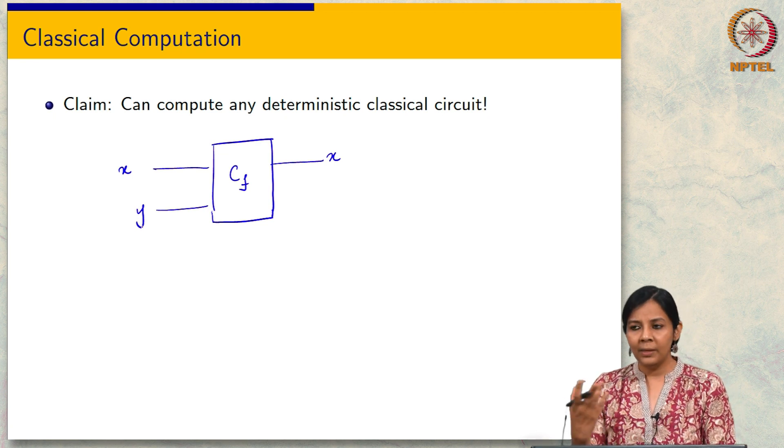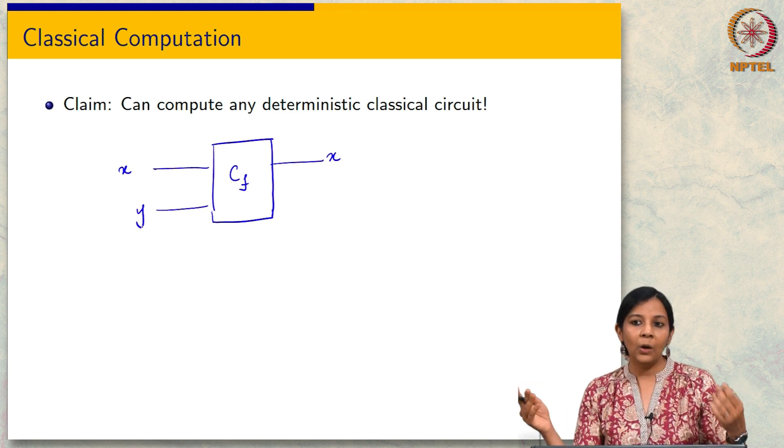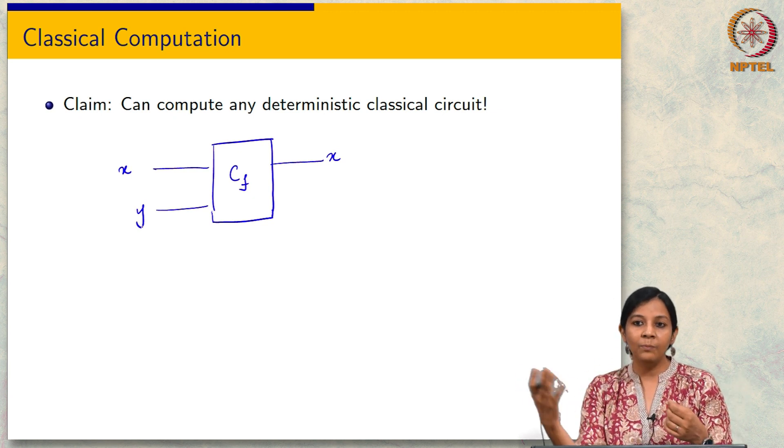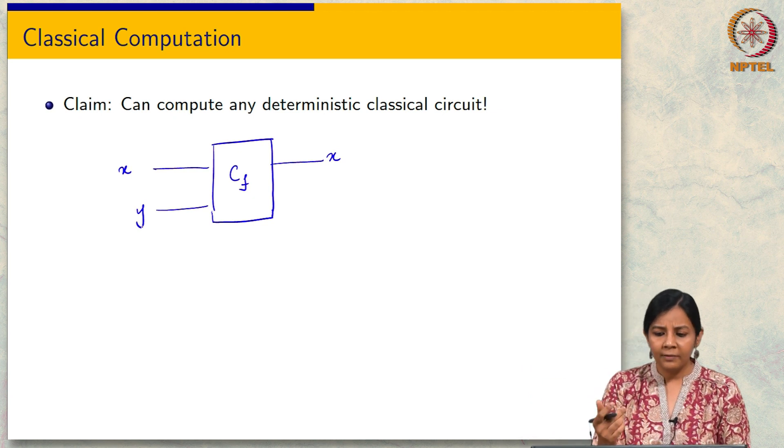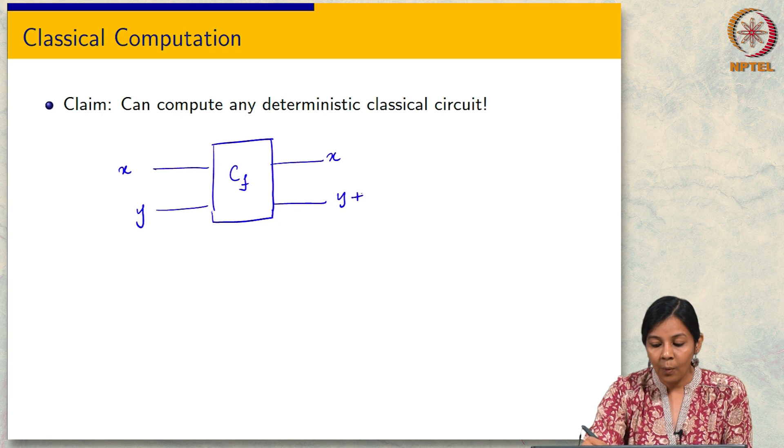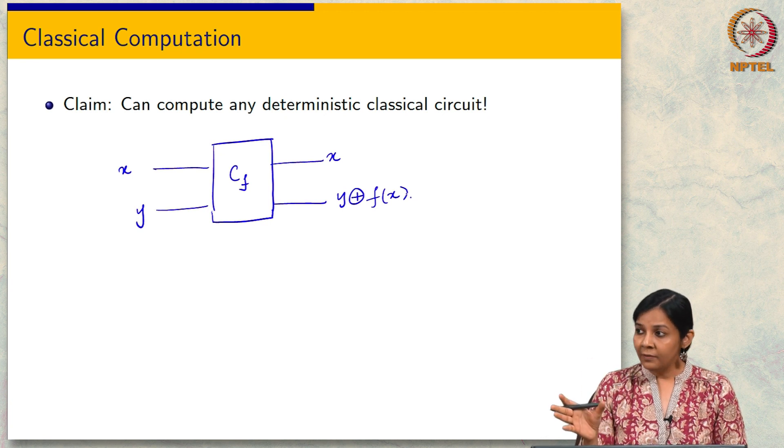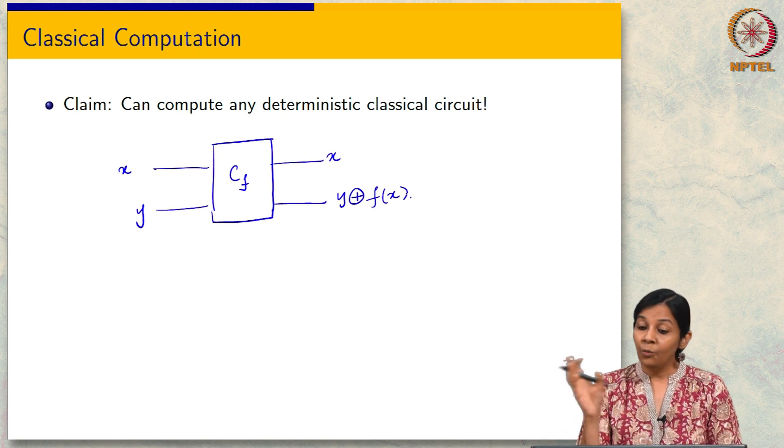For simplicity we will typically think of them as Boolean. Anyway in computer science we just like to think about Boolean functions because any function with a longer output can be written as many Boolean functions. So, it suffices to think of Boolean functions. This will be y⊕f(x).